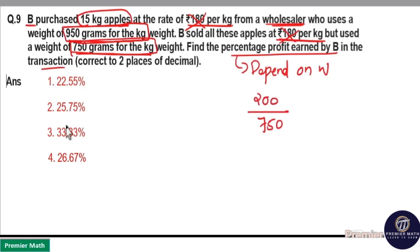So for each 750 grams he sold instead of 1 kilogram, his savings is 200 grams. That is 950 minus 750, 200 grams remaining. That is for each 750 grams he sold, 200 grams is his savings.